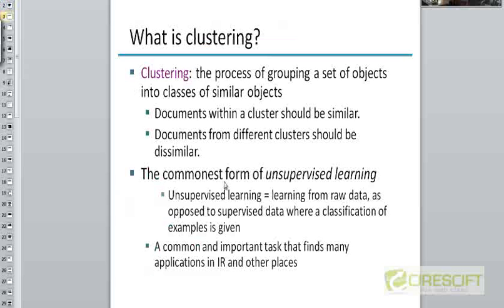So, what is clustering? Let's start by defining what clustering is. As the name indicates, clustering refers to the process of grouping together a set of objects — in our case, a set of documents — into a collection of clusters or classes of similar objects. One simple example is the way books in a library are arranged: they are grouped into different subject areas, and you can think of each shelf label as labeling different clusters of documents.